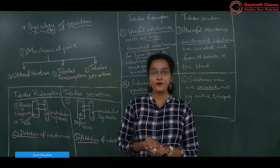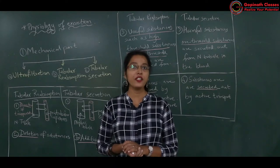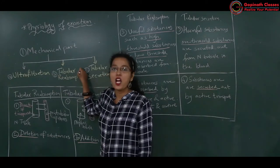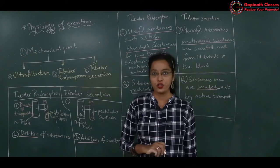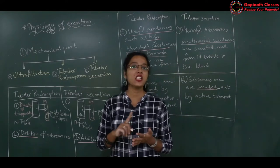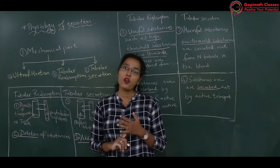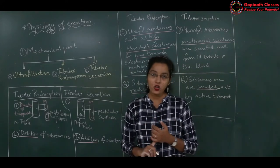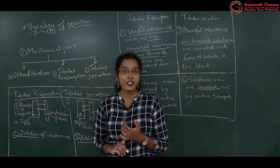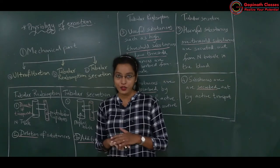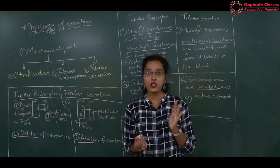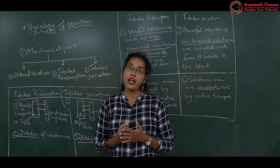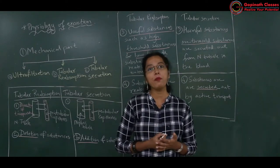Hello students. In the last session we studied the first process of urine formation. In the mechanism of urine formation there are 3 processes: ultrafiltration, tubular reabsorption, and tubular secretion. In ultrafiltration we studied the net filtration pressure needed for filtration, which is 10 mmHg. The formula is glomerular hydrostatic pressure minus the sum of capsular hydrostatic pressure and blood colloidal osmotic pressure.